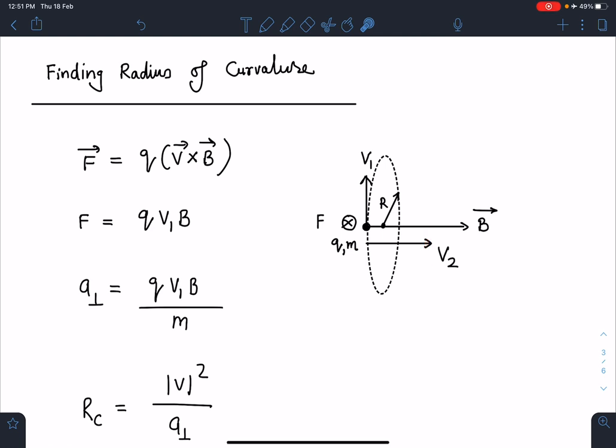So net force is F = qv₁B. Now the very interesting part is this force is perpendicular to velocity, and that is what we were looking for. So directly I can write a_perpendicular = qv₁B/m.